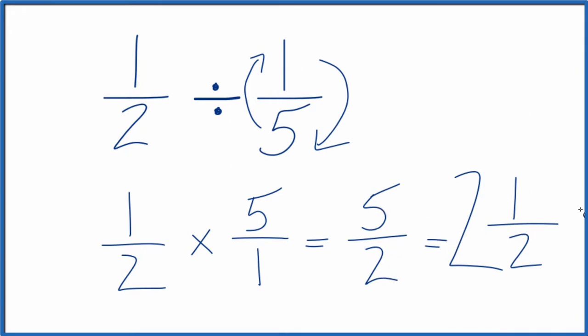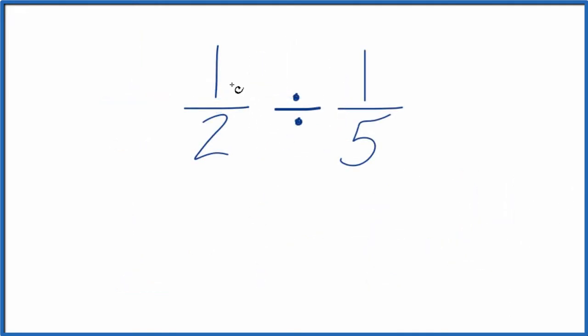There's one other way we can do this. We can take 1 times 5, that gives us 5, and 2 times 1, that gives us 2, and we get 5 halves again.